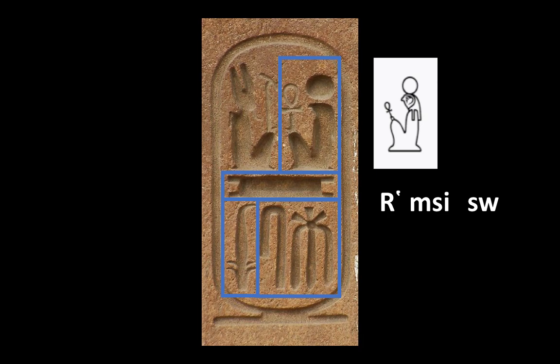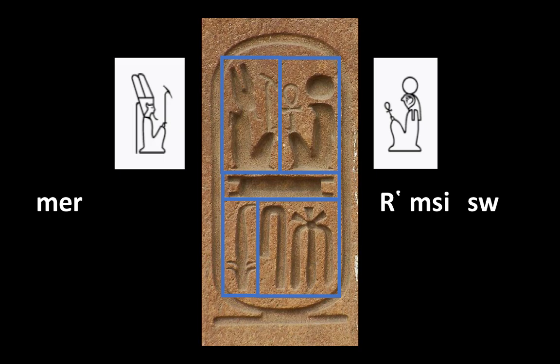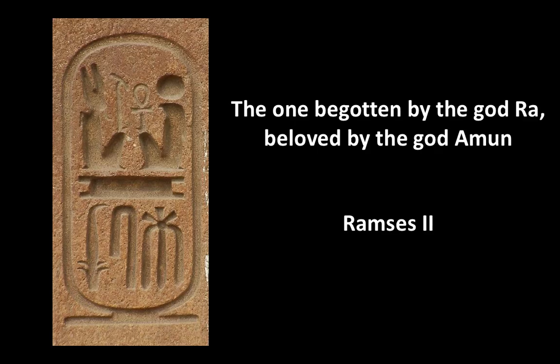Then we move to the center where we identify another hieroglyph, which transliterates as Mer. This means 'beloved.' Incidentally, the stem of this verb is preserved in Coptic, where Me means 'to love.' Finally, on the top left corner, we identify another hieroglyph representing a god — in this case, the god Amun. So together, Mer Amun means 'beloved by Amun.' The whole contents of the cartouche translate roughly as 'the one begotten by the god Ra and beloved by the god Amun.'